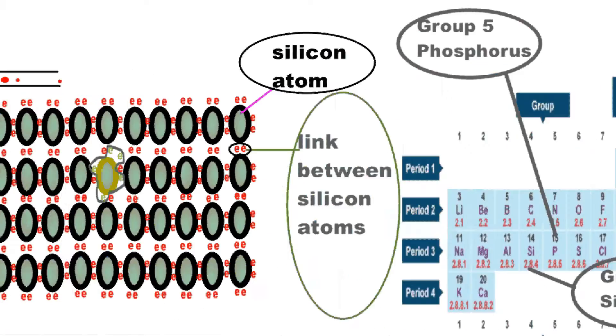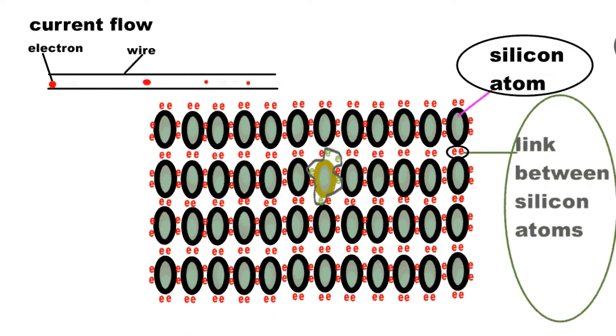This means that there is one more electron to move around, and so there is more current flow now than there was before due to the extra electron.